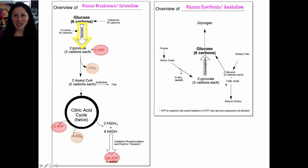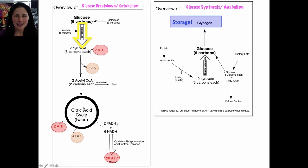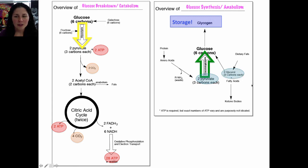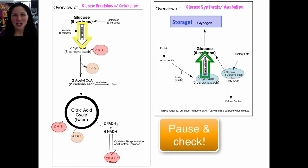Now let's look at anabolism. In our bodies, glucose is stored as the polysaccharide glycogen. Our bodies store glucose as glycogen and then hydrolyze it back into glucose so that glucose can go through glycolysis and the citric acid cycle to produce energy. Through breakdown of polysaccharides, the cell receives quick bursts of energy. Pyruvate can also be converted into glucose through a process called gluconeogenesis. Both pyruvate and glycerol — each three carbons — can be combined into the six-carbon molecule of glucose.